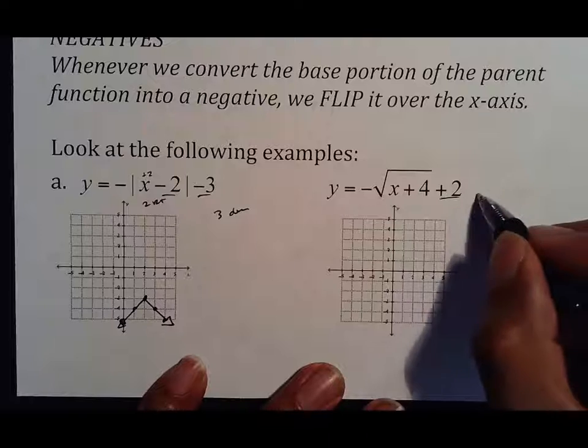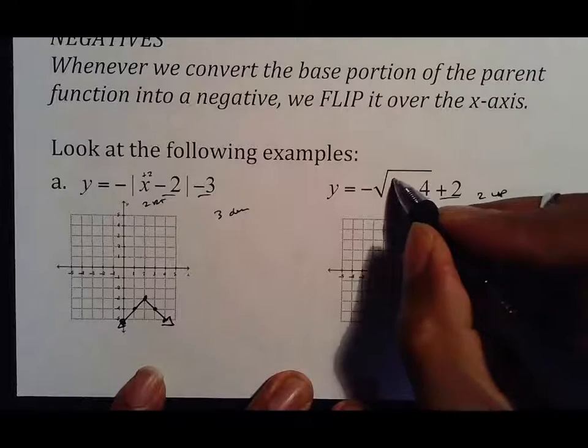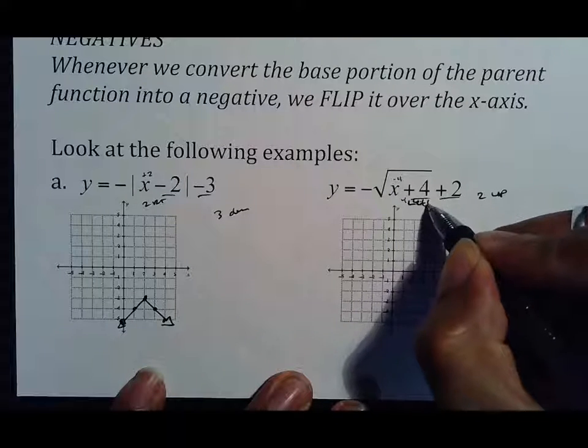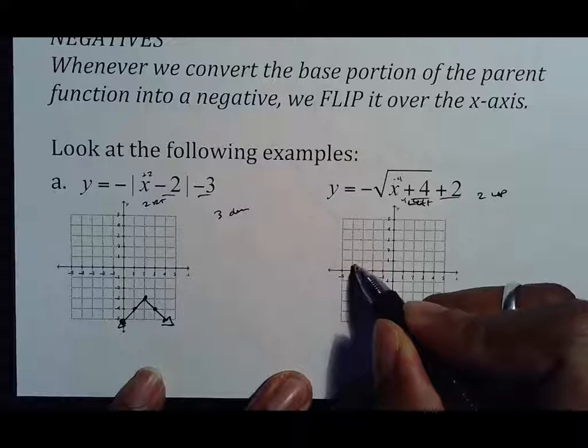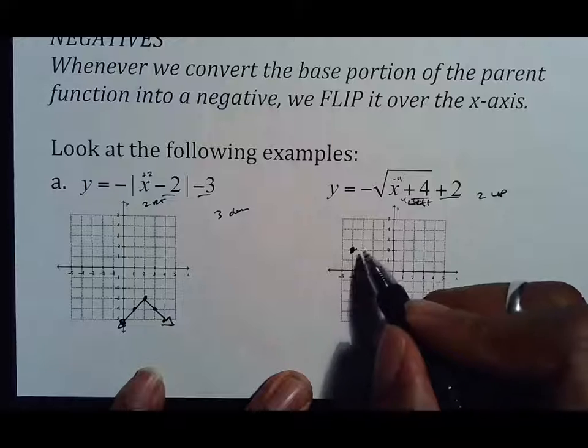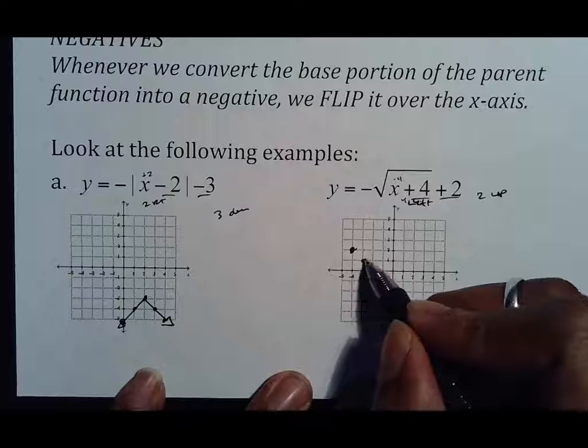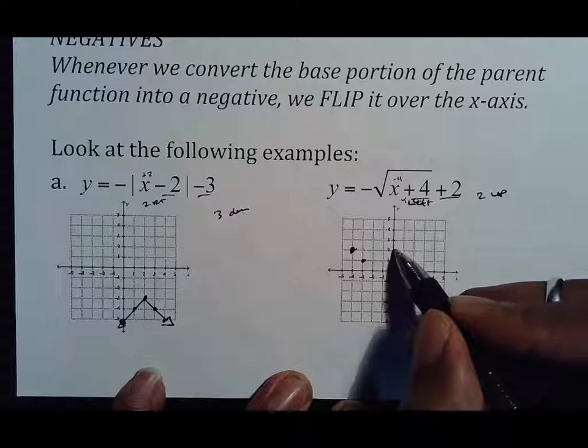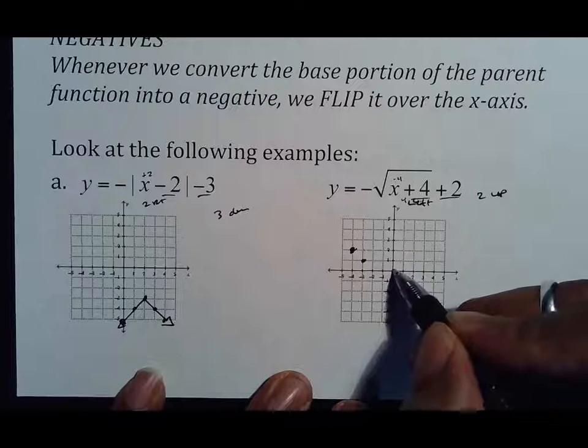Second example, this two is telling me to go two up. This four is on the inside, so it's telling me to go four left. So four left, one, two, three, four, two up, one, two. Now for square root, I usually go one over and one up, but instead I'm going to go one over and one down. For square root, I usually go four over and two up, but I am going to go four over and two down.